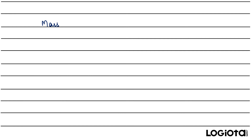Suppose you are given the mass of some molecule, and you want to calculate the number of molecules or you need to calculate the number of atoms. Then it's better to first convert it into number of moles and then convert it into number of molecules or atoms.